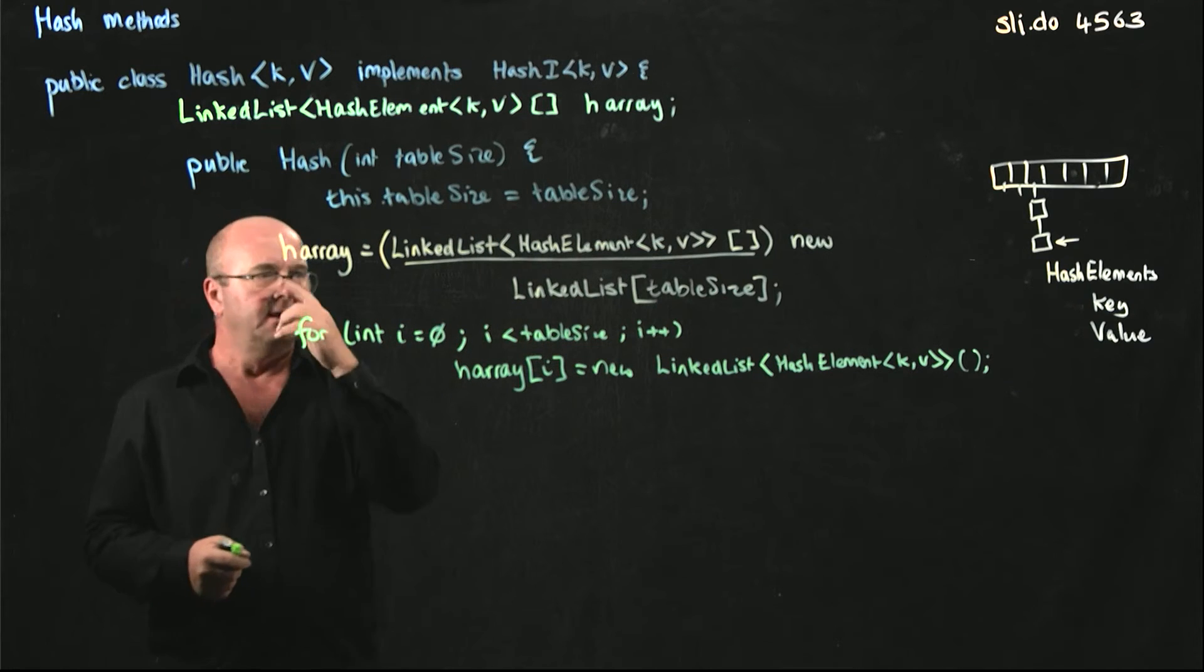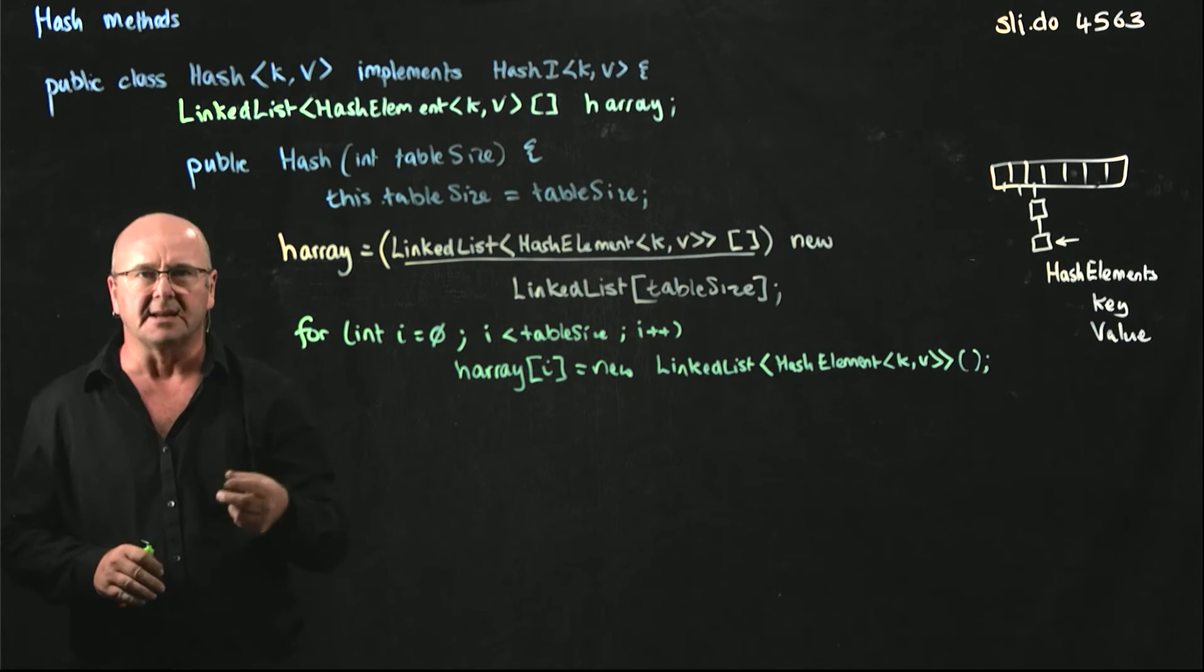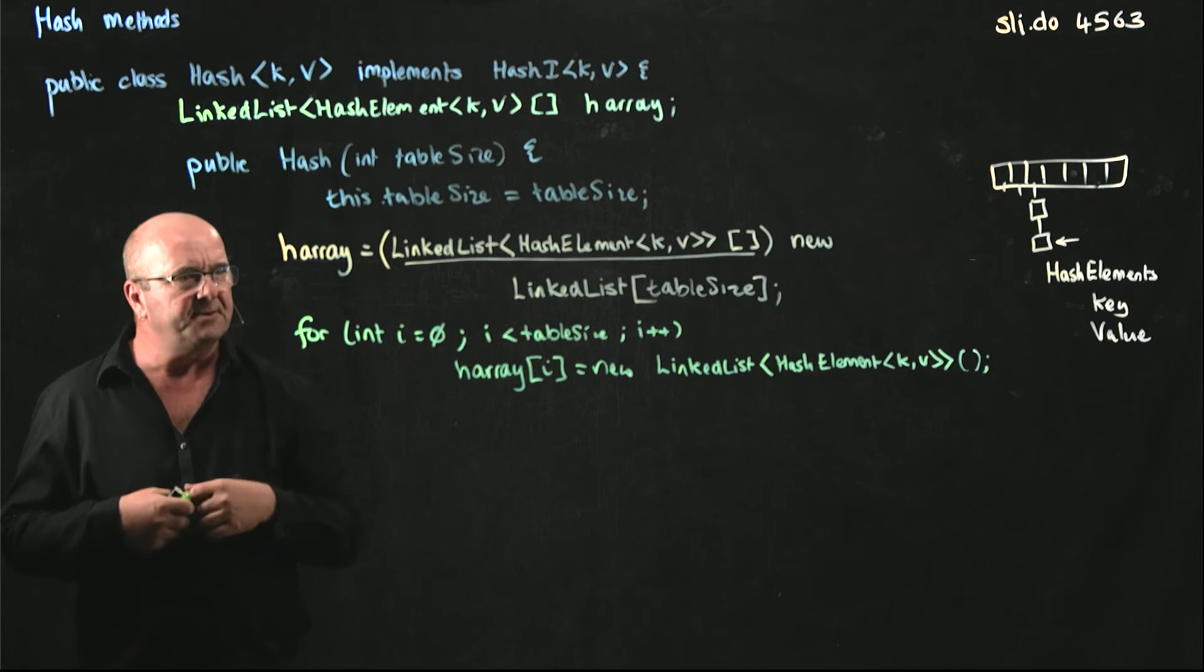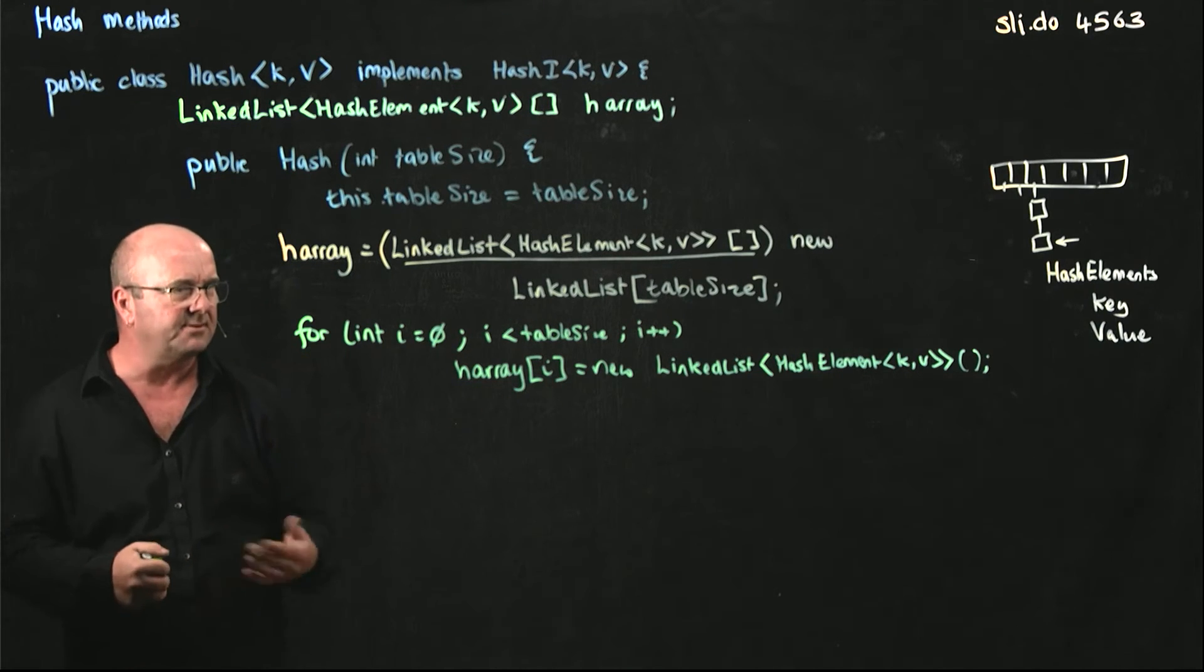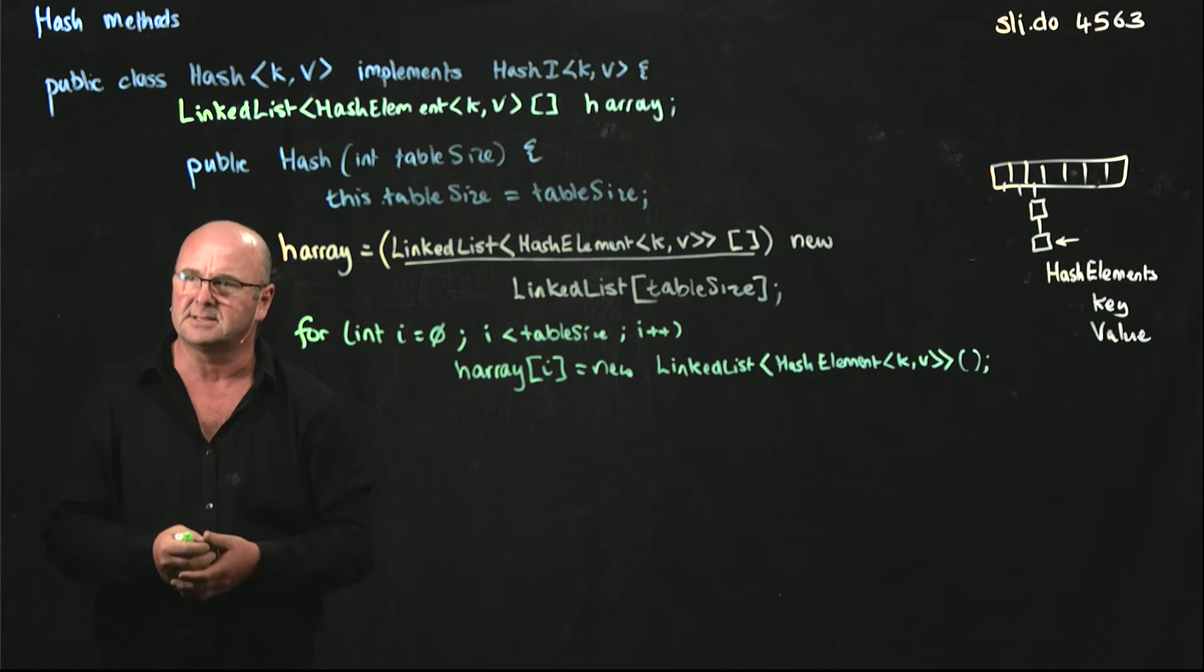Now we're guaranteed any time we go to any position in our array, there's a linked list there. If we're looking for something, if our linked list is empty, that's fine. Our linked list can deal with looking through empty arrays and returning null or throwing a no such element exception.